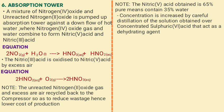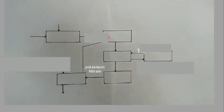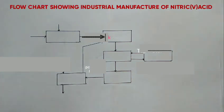Concentration is increased by careful distillation of the solution over concentrated sulfuric acid, which acts as a dehydrating agent. The flow diagram below shows the industrial manufacture of nitric acid.